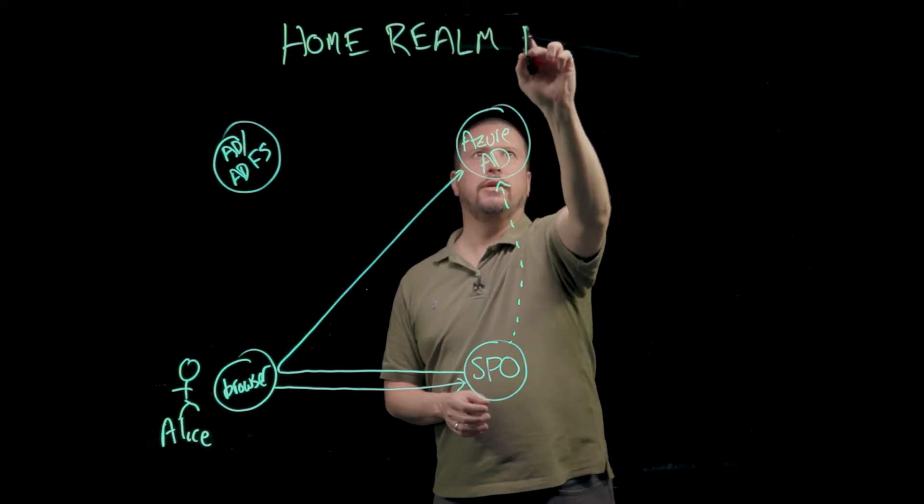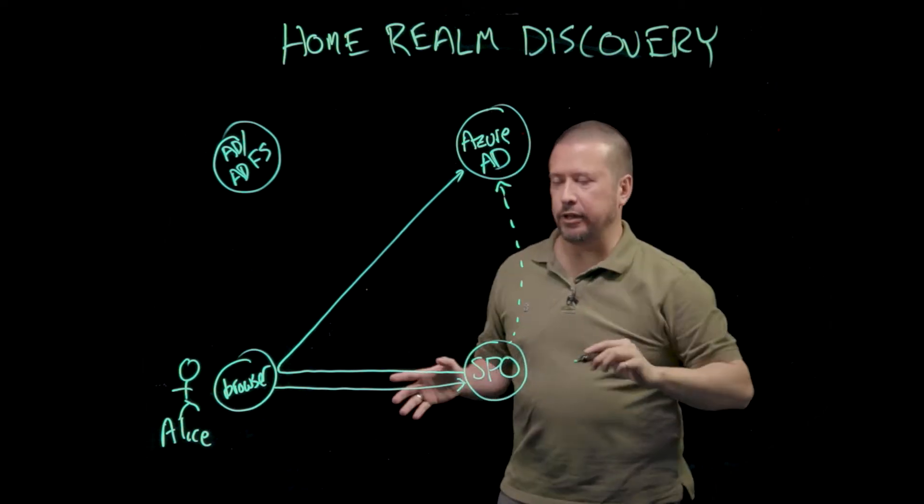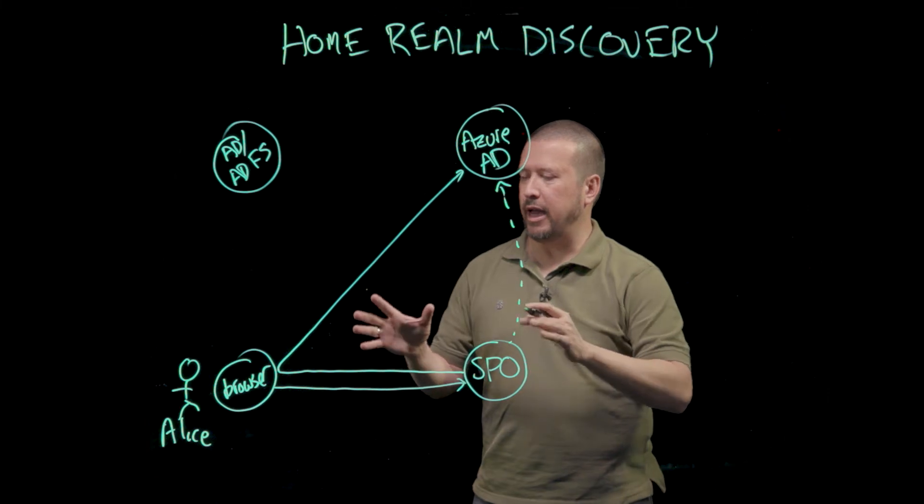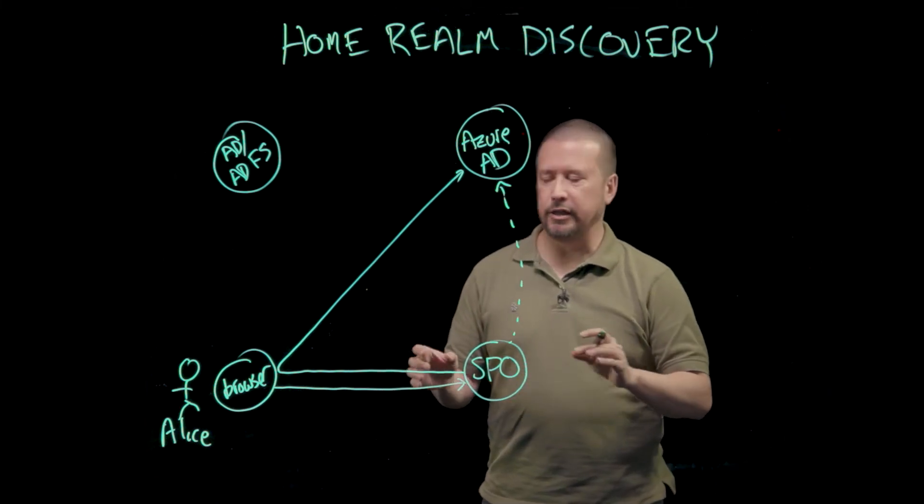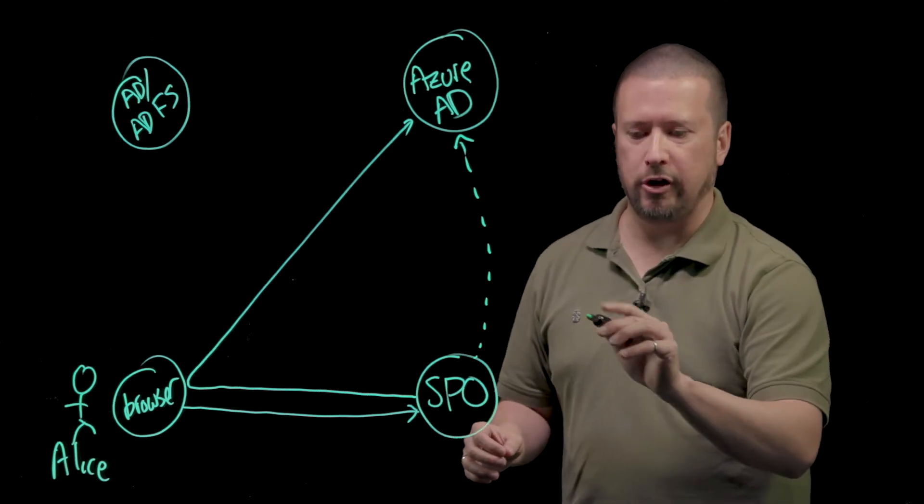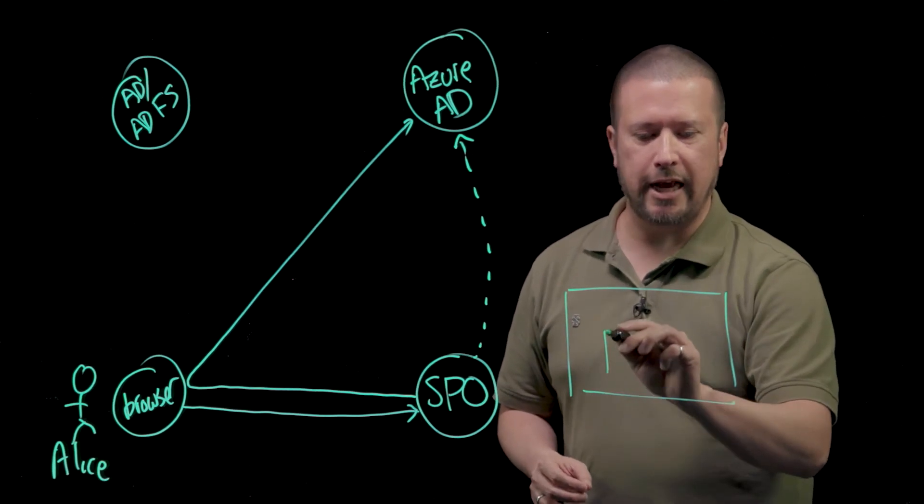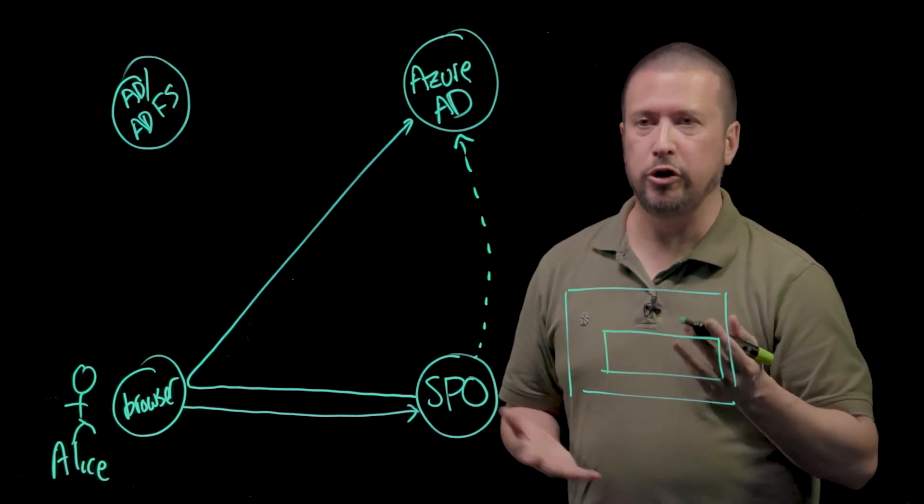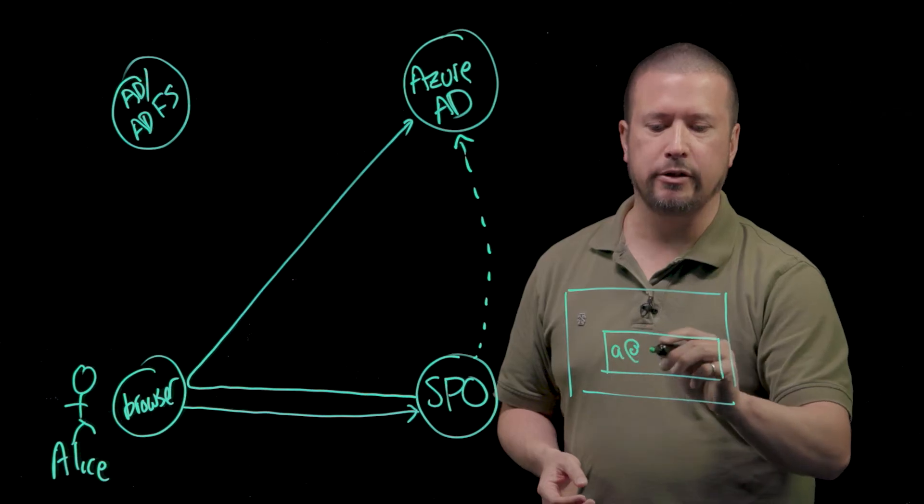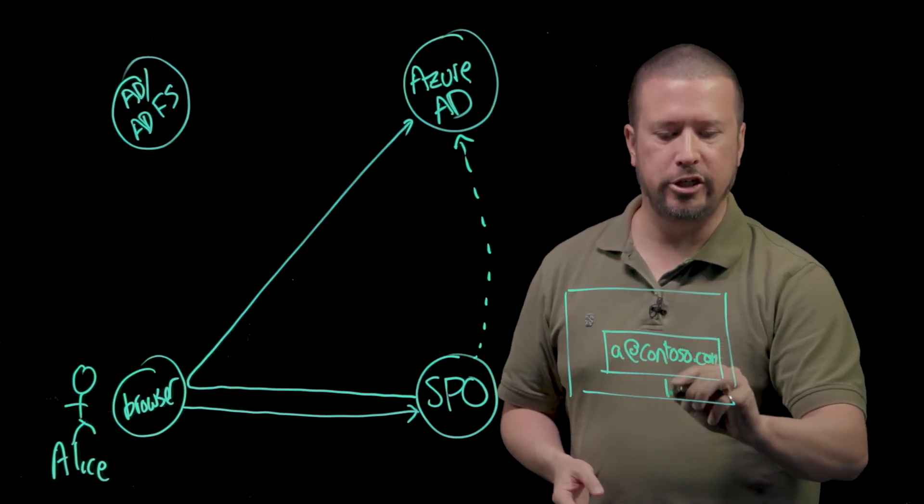Home Realm Discovery is the process of sending Alice to the place where she can actually authenticate. The way that Azure Active Directory does this is actually pretty interesting. When Alice is looking at the sign-in page of Azure Active Directory, and you'll have seen this before yourself, it first asks her to enter her username. She enters alice at contoso.com, let's say, and then she presses next.